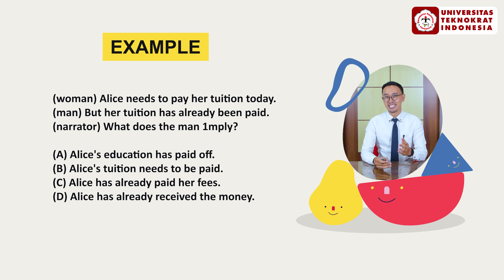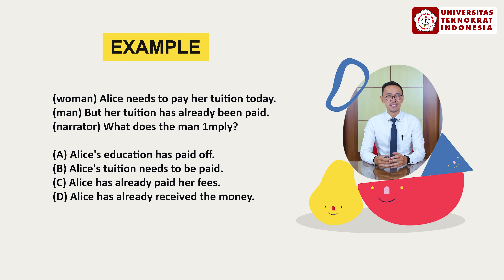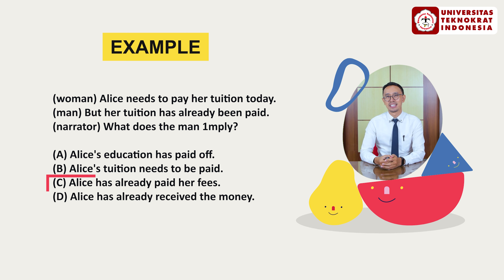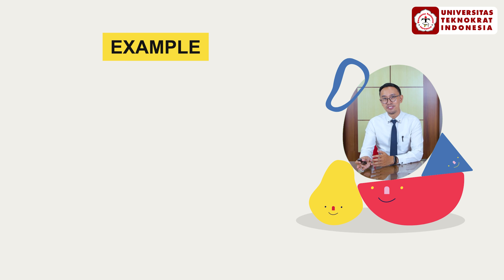The woman said 'Alice needs to pay her tuition today' and the man said 'But her tuition has already been paid.' This means the tuition has already been paid — it's in passive. So the best answer is C: Alice has already paid her fees. That's the synonym, converting from passive into an active sentence.